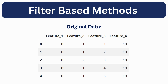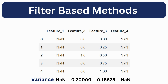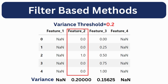Let's understand this with an example. We have a dataset that contains four features. First, we will normalize the data and get values between 0 and 1. Now we calculate the variance of each feature and get these values. Here we have defined a variance threshold of 0.1. We got two features with variance greater than this threshold, so we retain those and discard the rest. You can adjust the threshold based on your data — if we set it to 2, then only one feature will be extracted.